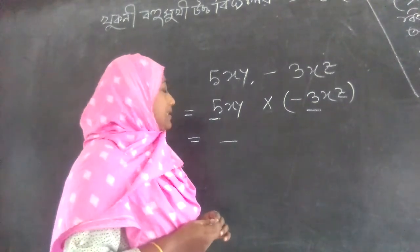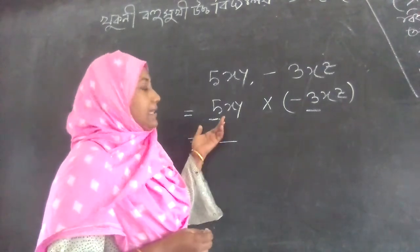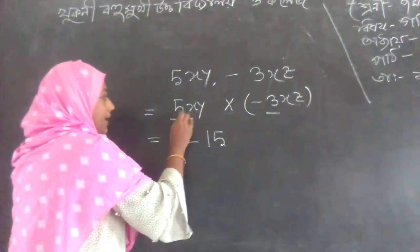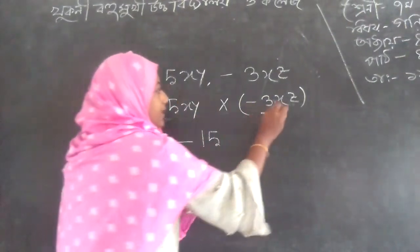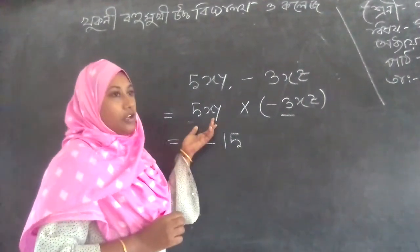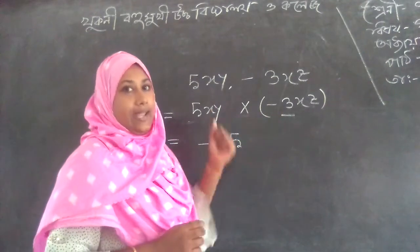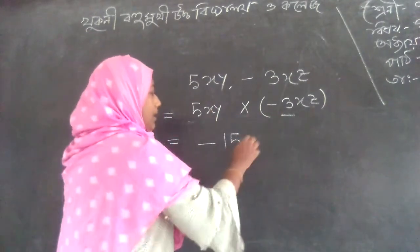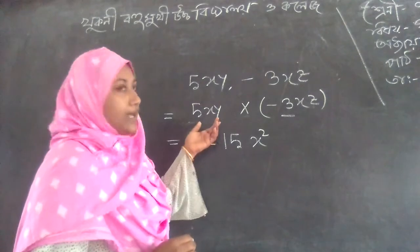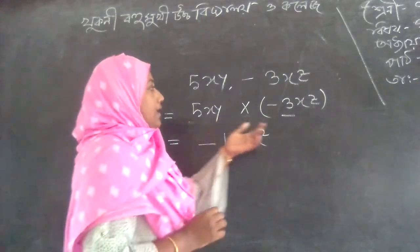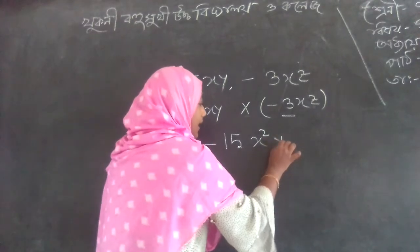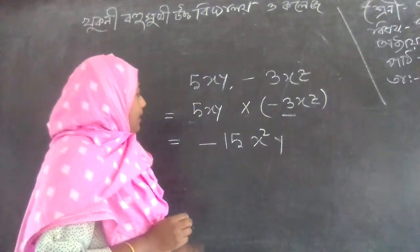What does x mean? 2, 3, 3, 4, 4, 4, 3, 4, 4, 5, 4, 5, 5, 5, 5, 5, 5, 6, 5, 6, 6.